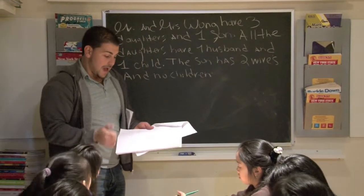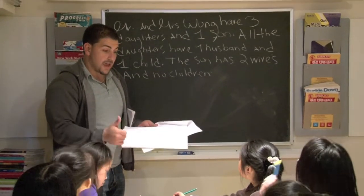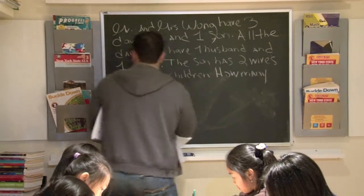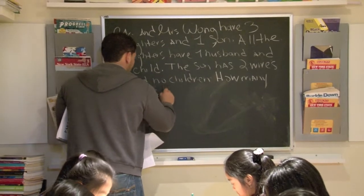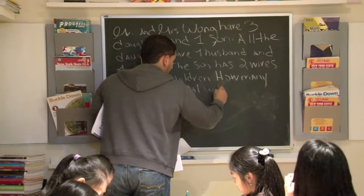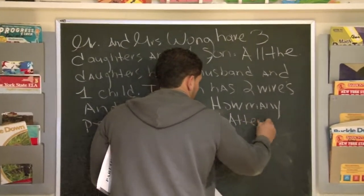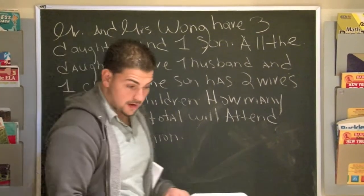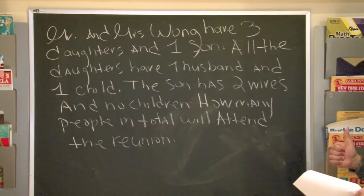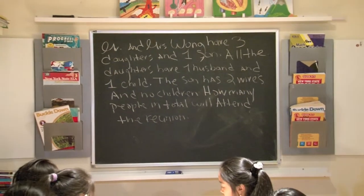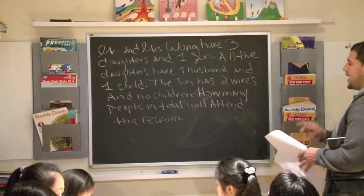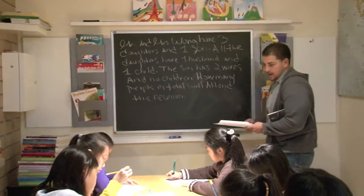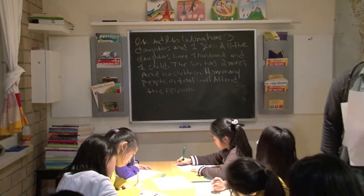And finally, here's the question: how many people are going to be at the house when they have a reunion? How many people in total will attend the reunion? All right, so take a second to work it out. Let's read it one more time: Mr. and Mrs. Wong have three daughters and one son. All the daughters have one husband and one child. The son has two wives but no children. How many people in total will attend their family reunion? Take a second and work it out. Make sure you show your work.